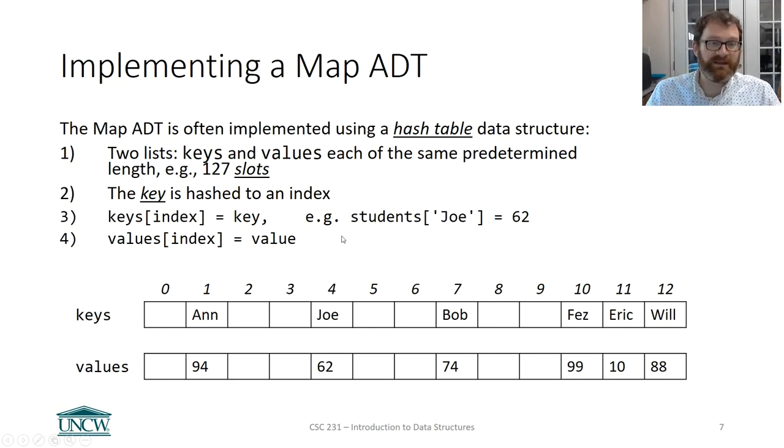Then later, if you want to get the value out, you hash the key again to see where is it. Oh, it's at index four. They want the value that's at index or a key of Joe. Let me return to them 62, all right? Now, as you go to implement it, this is kind of the data structure you're going to use.